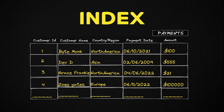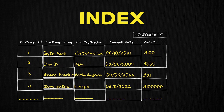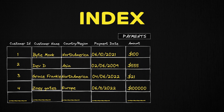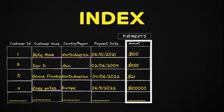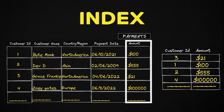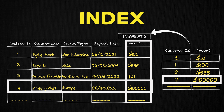Database indexes are auxiliary data structures optimized for fast search on a specific column. For example, I can create a database index on the amount column, which means I create another table where the amounts are in sorted order. This auxiliary table is then pointed to our main payments table so the amounts point to their corresponding records. With the database index on the amount column, I can quickly find the customer who paid the maximum amount in constant time.